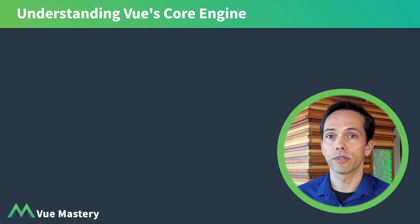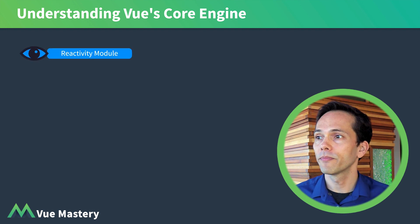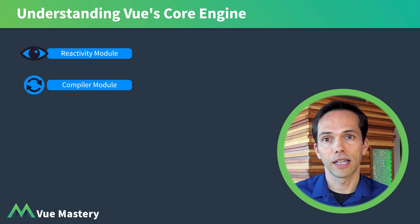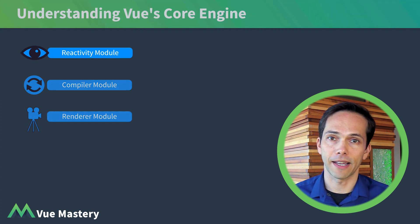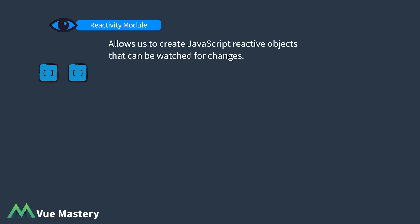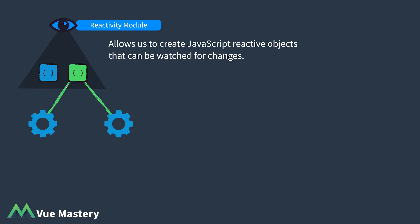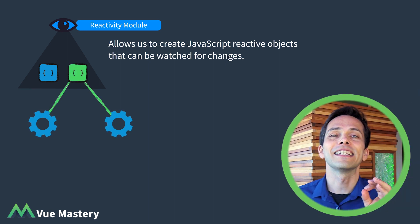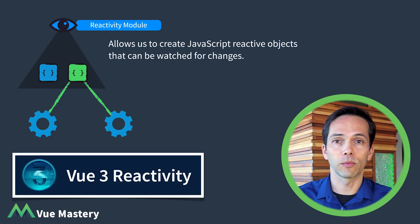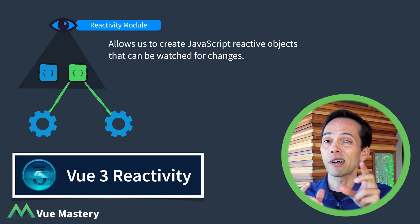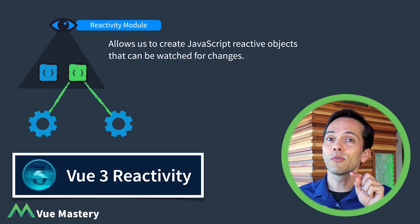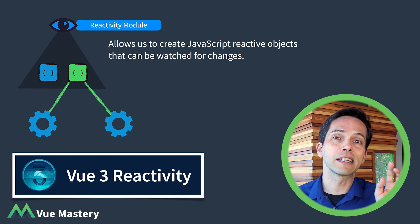Vue has three core modules: the reactivity module, the compiler module, and the renderer module. The reactivity module allows us to create JavaScript reactive objects that can be watched for changes. When code which uses these objects is run, they're tracked so they can be run later if the reactive object changes. There's an entire course on Vue 3 reactivity which is highly recommended — if you take it before this course, things will be a lot more understandable when we get to the reactive part.